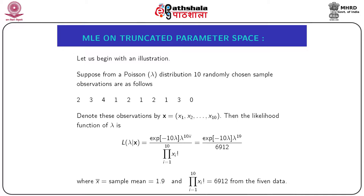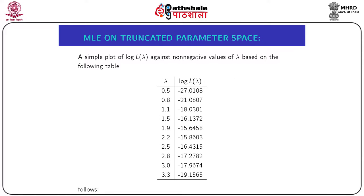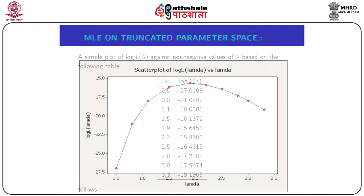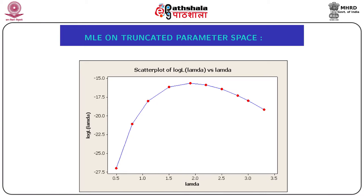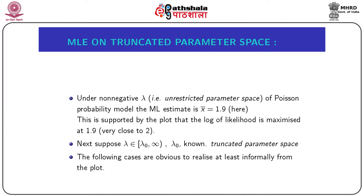Hence the likelihood function can be written as e^(−10λ) · λ^19 / 6912. A plot of log L(λ) against non-negative values of λ shows that the log-likelihood is parabolic, attaining its maximum very close to λ = 2. Theoretically, under the unrestricted parameter space (λ ≥ 0), the MLE of λ is the sample mean x̄ = 1.9, which is supported by the plot showing the log-likelihood is maximized at 1.9.